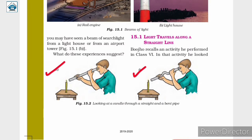In the second case, you were not able to see the candle flame through the bent pipe. This is because the light coming through the bent pipe is blocked. This activity suggests that light travels along straight lines.